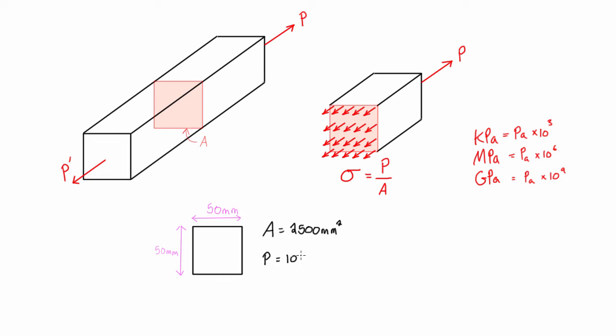So when we want to go calculate for our normal stress here, that's just P over A. This is our applied force over the cross-sectional area of the member. We're going to get 100 kilonewtons over 2,500 millimeters squared, and that's going to give us 0.04 kilonewtons per millimeter squared.